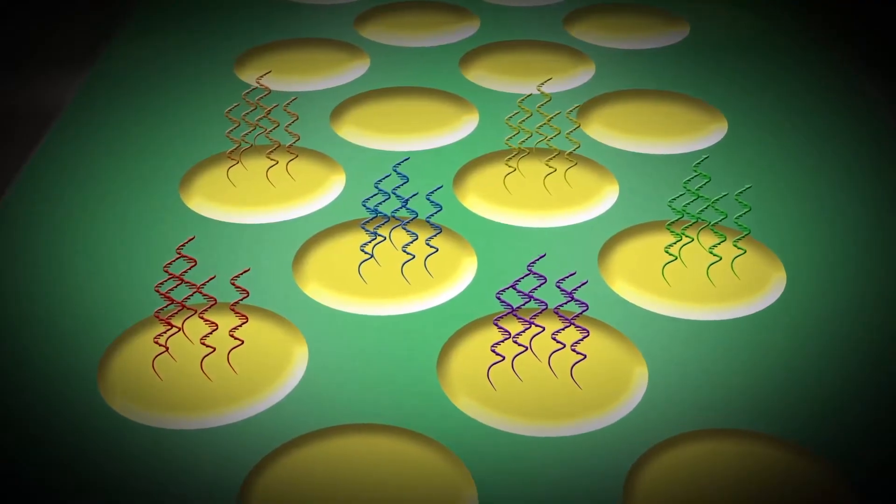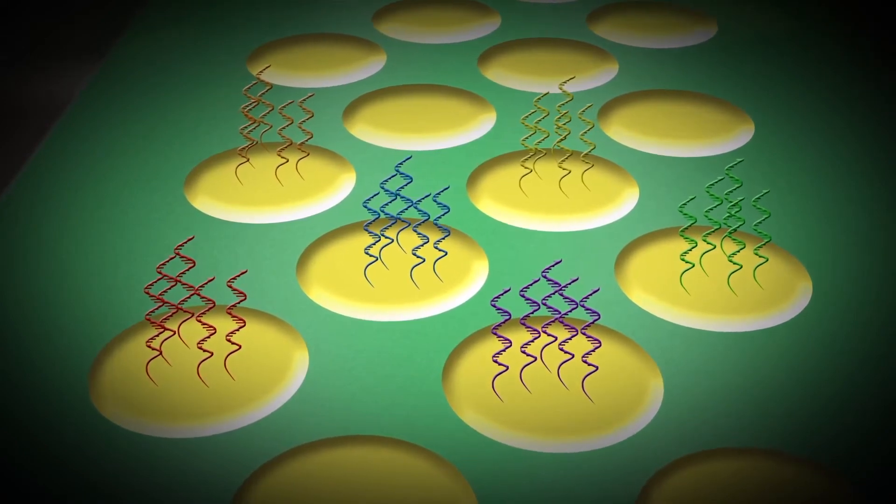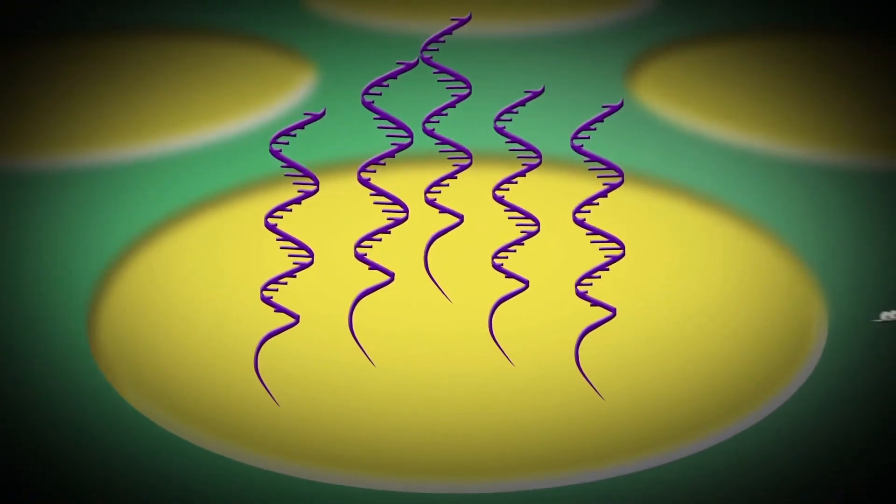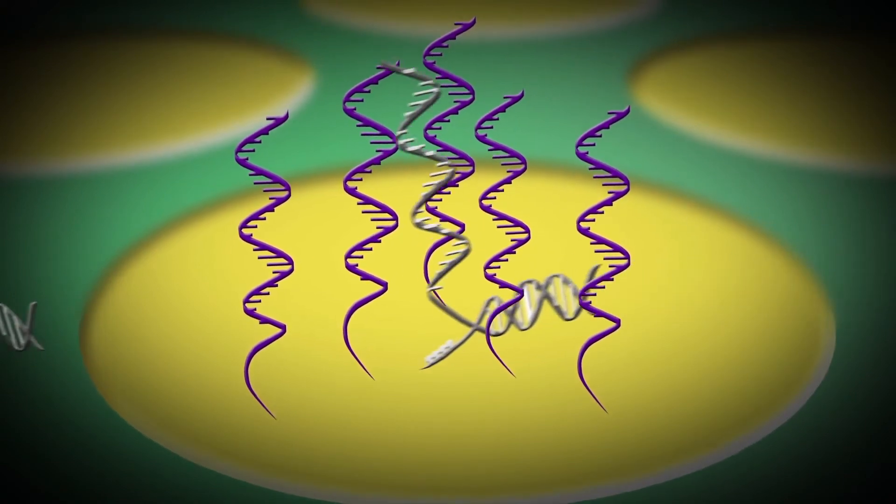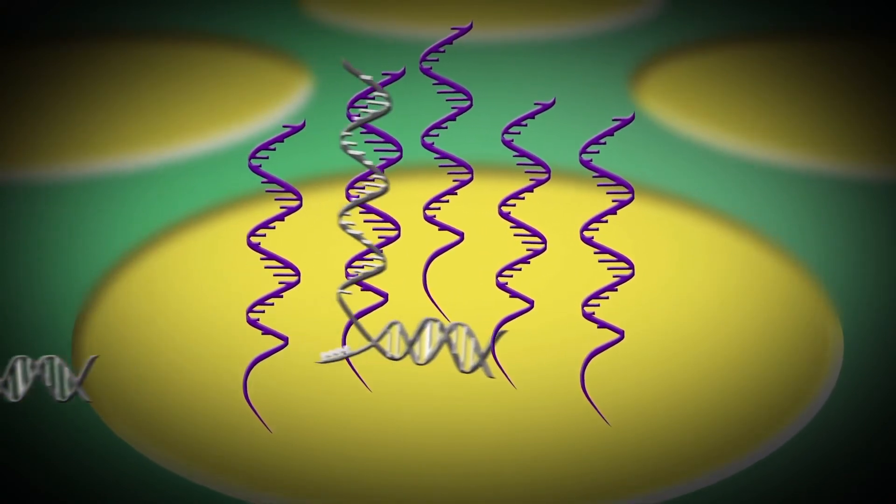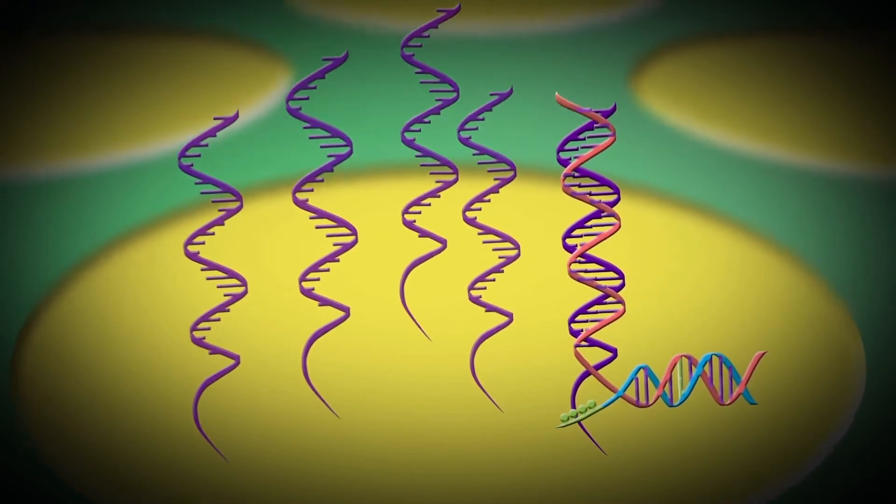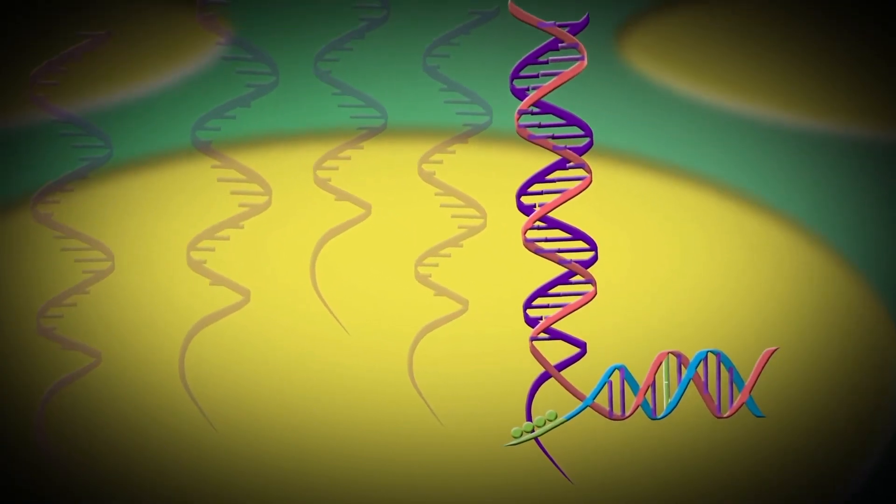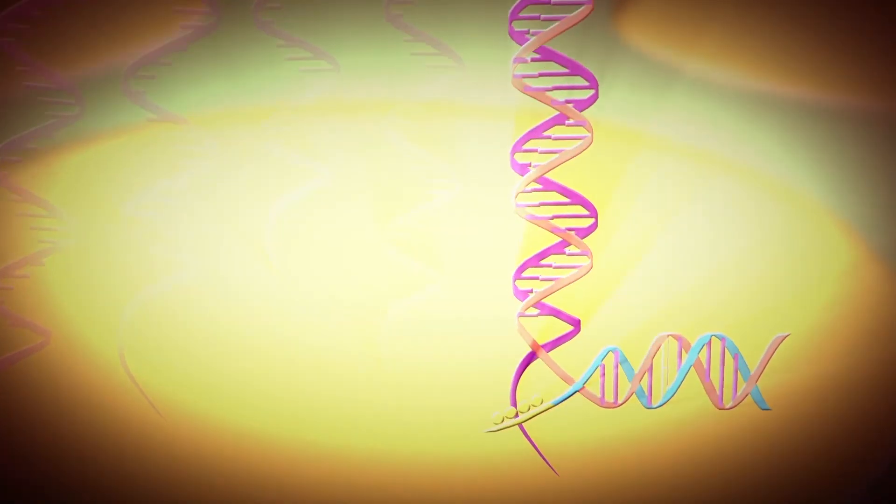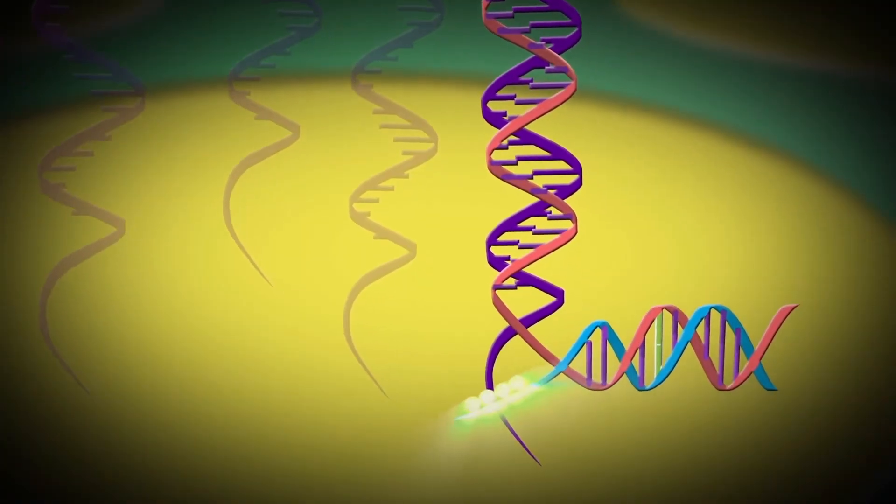Another unique and enabling aspect of the ePlex system is Genmark's proprietary electrochemical detection technology known as eSensor. With eSensor detection, sequence-specific capture probes bind both the target amplicons and the ferrocene labeled signal probe. When the sandwich of capture probe, target sequence, and signal probe complex is formed on the electrode surface, the ferrocene label generates an electrical current that is detected by eSensor, indicating a positive signal.